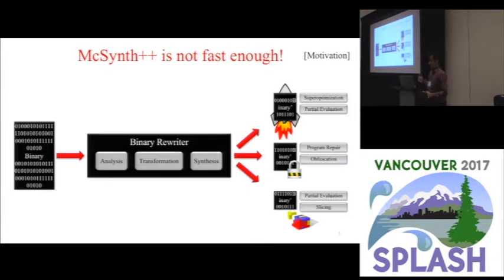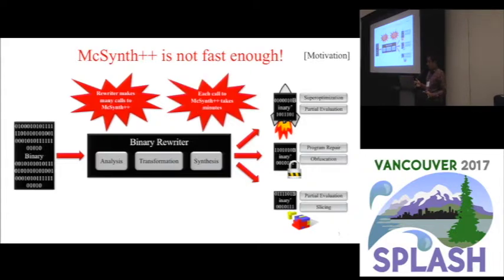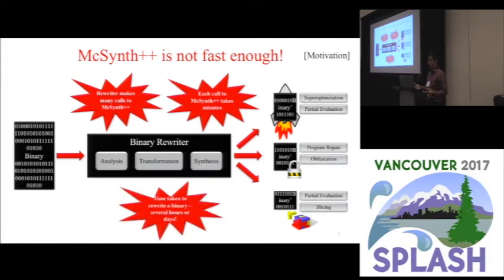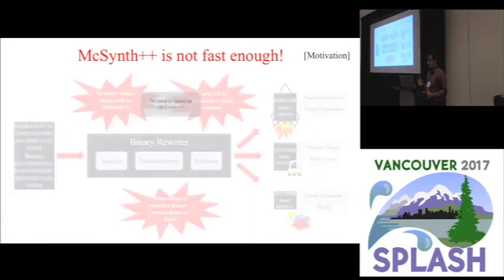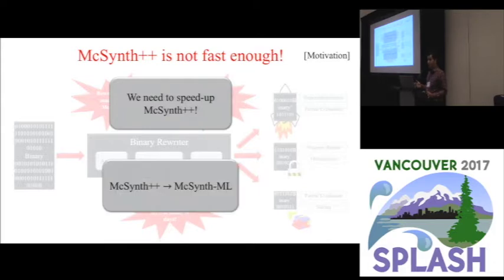However, even with a state of the art machine code synthesizer, this rewriter is just not fast enough. To rewrite a typical binary, which will have hundreds of thousands of basic blocks and instructions, the rewriter would have to invoke McSynth hundreds or thousands of times. And each call to McSynth can take a few minutes or a few hours to obtain an implementation for the input formula, leading to a prohibitive cost of what could be hours or more likely days. So our contribution here is to speed up our search by introducing machine learning methods that pick synthesis candidates that are more likely to be correct.